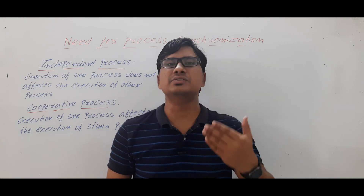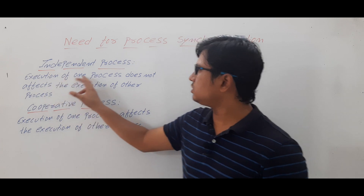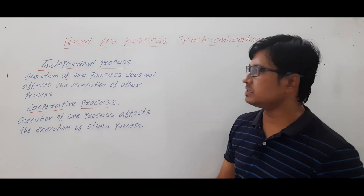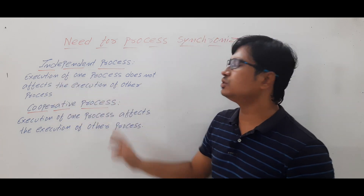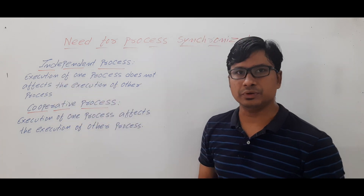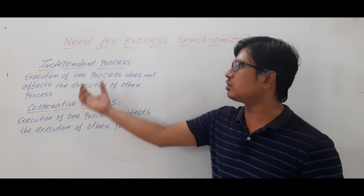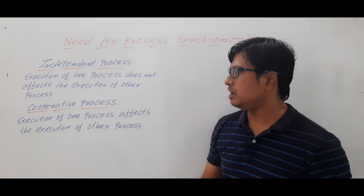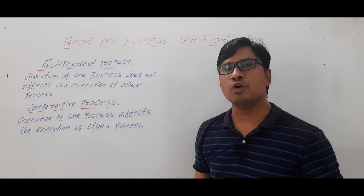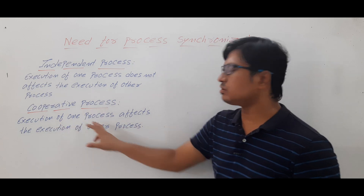First, let me discuss what is an independent process. Execution of one process does not affect the execution of another process — such kind of process we will call an independent process. When it comes to the cooperative process, execution of one process affects the execution of another process.